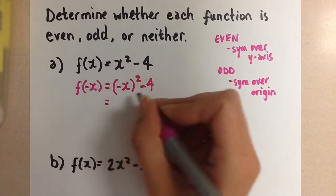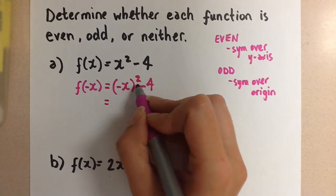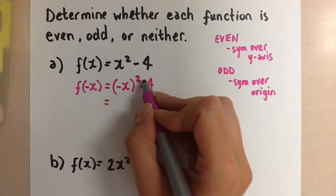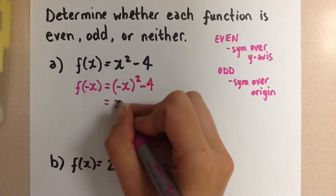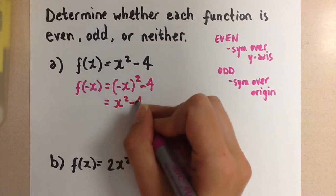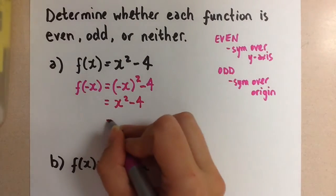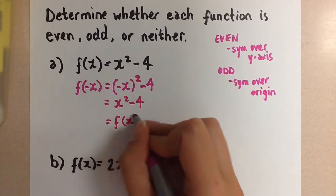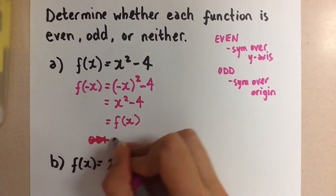So we get this. Now because the negative is under an exponent that is even, then we know this is going to end up being a positive. So we can simplify this to x² - 4. And we see that this is the same as the original equation. And so we can conclude that this function is even.